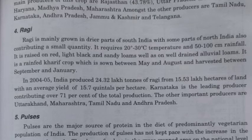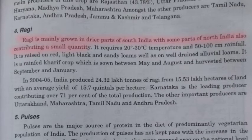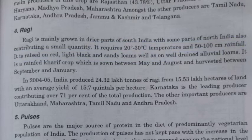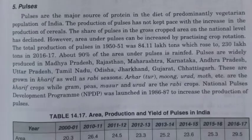Ragi is an important cereal crop mostly grown in the drier parts of South India and western India. It requires 20 to 30 degrees Celsius of temperature with rainfall varying between 50 to 100 centimeters. It can be grown in red soil, light black soil, or sandy loam soil. Ragi is sown as a kharif crop between May and August and harvested between September and January. India is the largest producer of ragi in the world, with major producing states being Uttarakhand, Maharashtra, Tamil Nadu, and Andhra Pradesh.